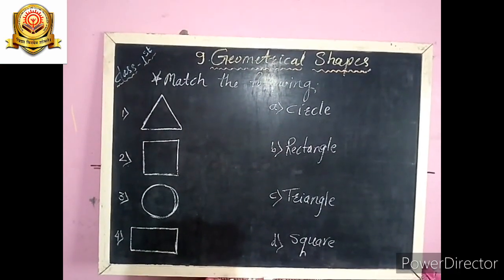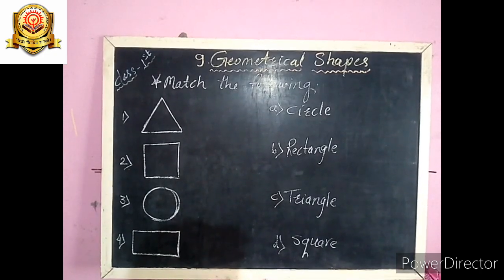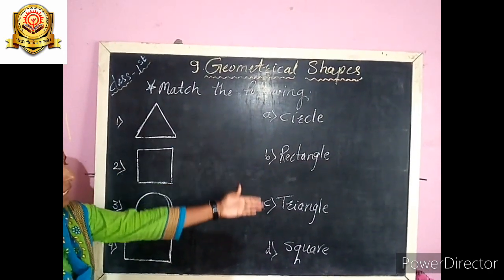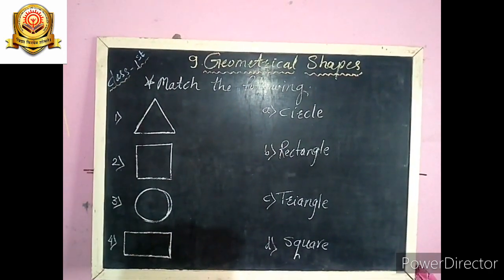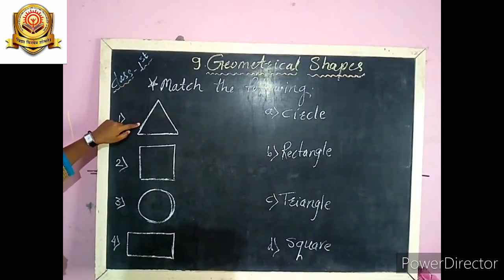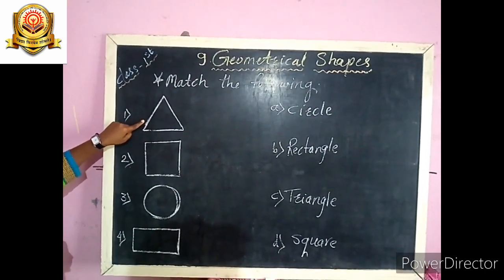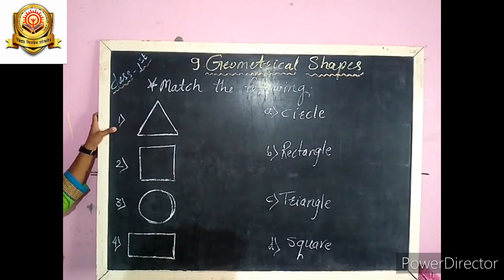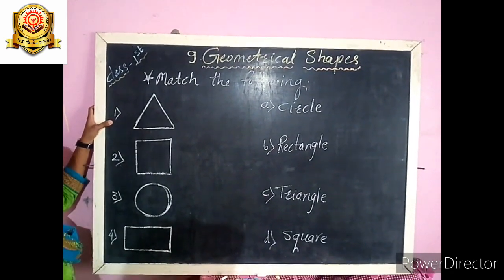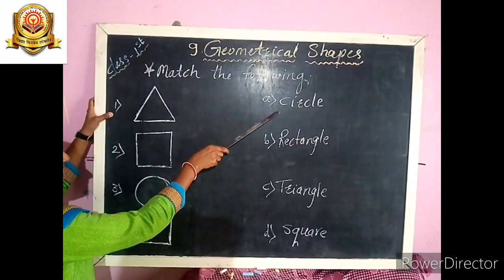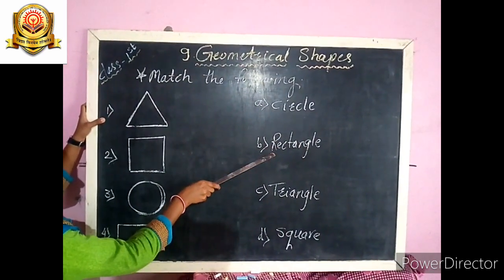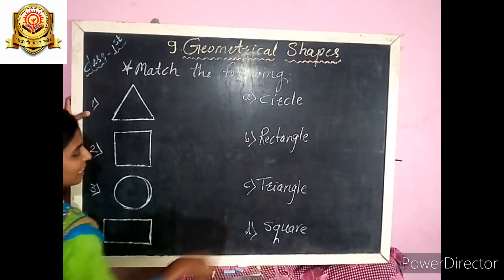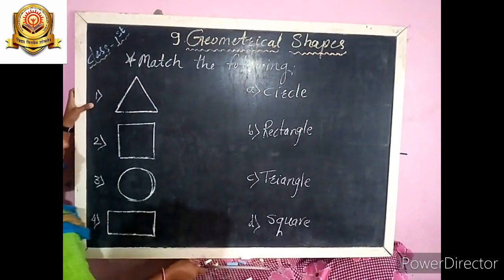Now you have to help me match the shapes with their spellings. These are the shapes and these are the spellings. Tell me the name of this shape. This is a triangle. Where is the spelling of triangle? T-R-I-A-N-G-L-E — triangle. So match it here.